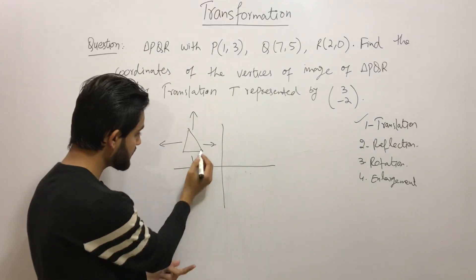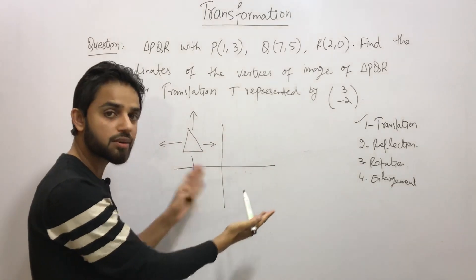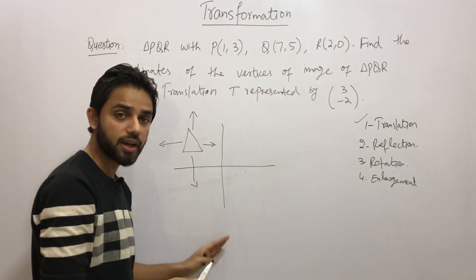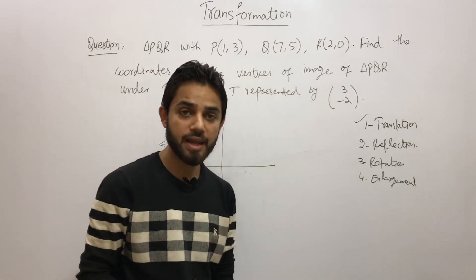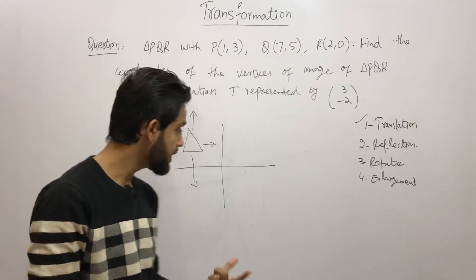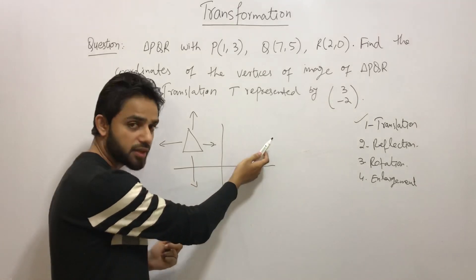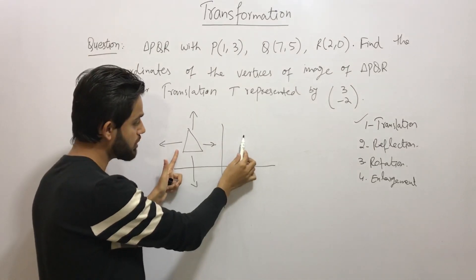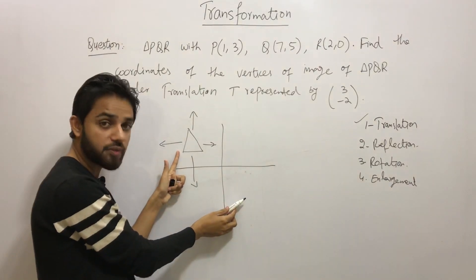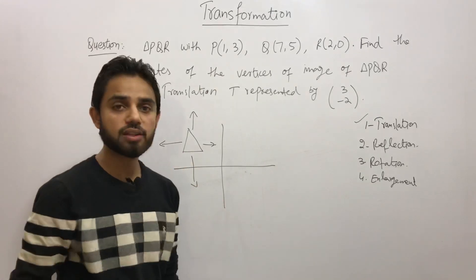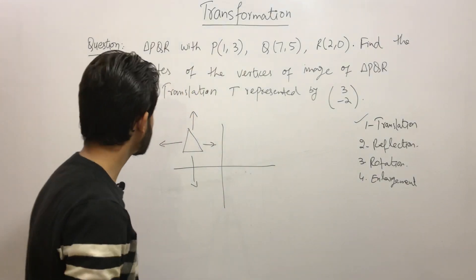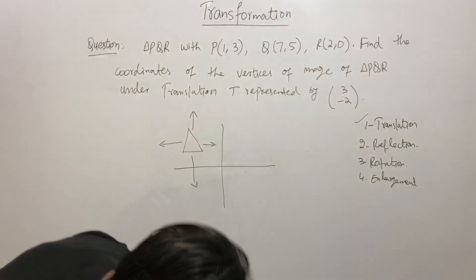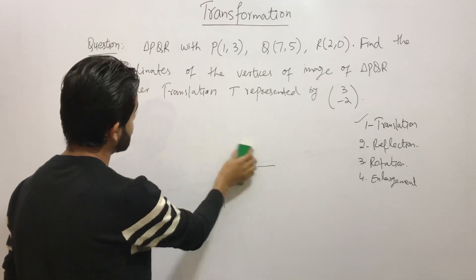These are all the possible directions I can move the triangle. It's not only the case that I can move along the positive or negative X axis, or only along the Y axis. I can also move along the plane — for example, three units to the right and minus two units on the Y axis, so it moves right and down at the same time. This is how translation works. Now we are going to solve a question.